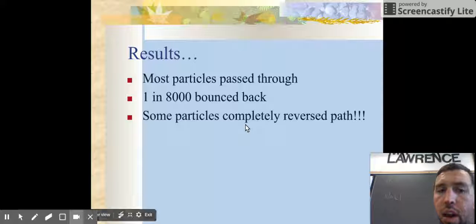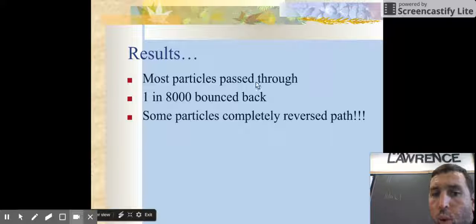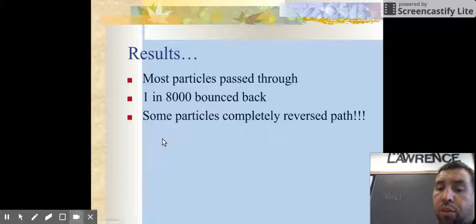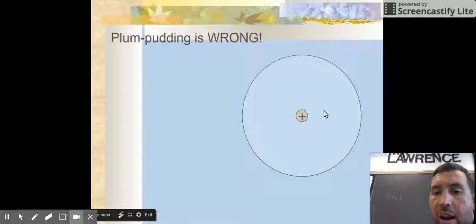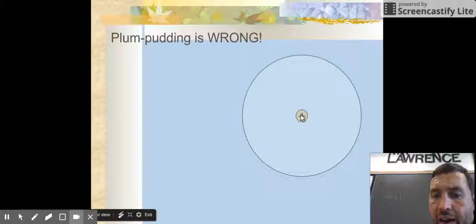And so here's the results. Most of the particles pass through. One in 8,000 bounce back. And some of those particles completely reversed their path. And this was astonishing to them. And so it led to the idea that in our atom, we must have some kind of dense area, and the rest of it must be empty space.